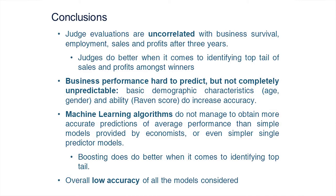The model that emerges is essentially: invest in smart guys in their 30s — not a very good model, and not much better than what we started with. The machines aren't picking up predictors that economists wouldn't think of normally. When we use trees, they're not growing very deep, and there are very few interactions — just very low accuracy overall.